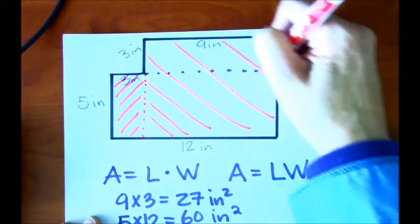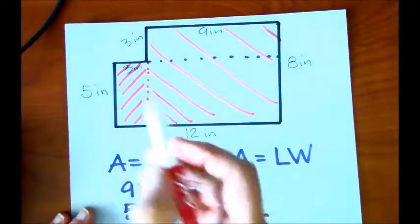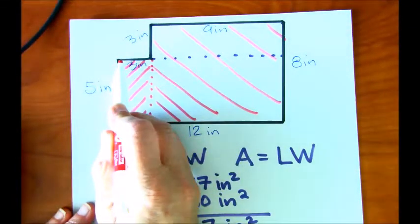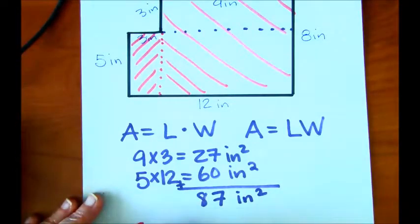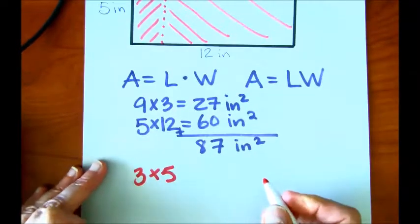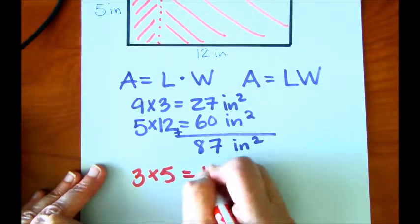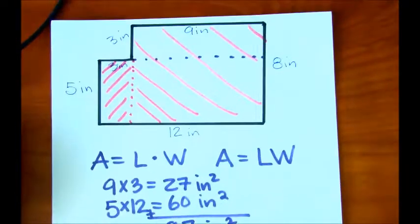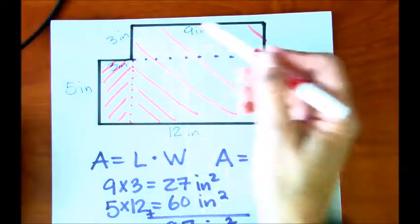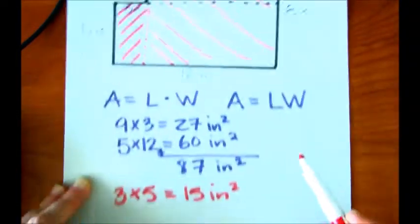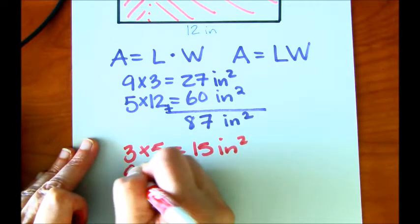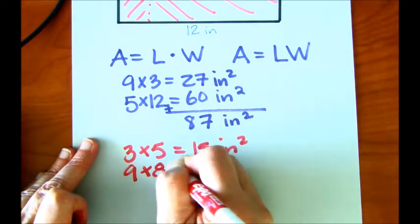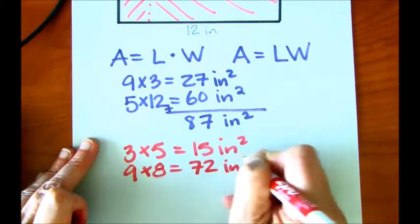So in this smaller one, we've got a 3 and a 5. So 3 times 5 is 15 inches squared. And then the much larger rectangle, we have a 9 and an 8. So 9 times 8, and that will give you 72 inches squared.